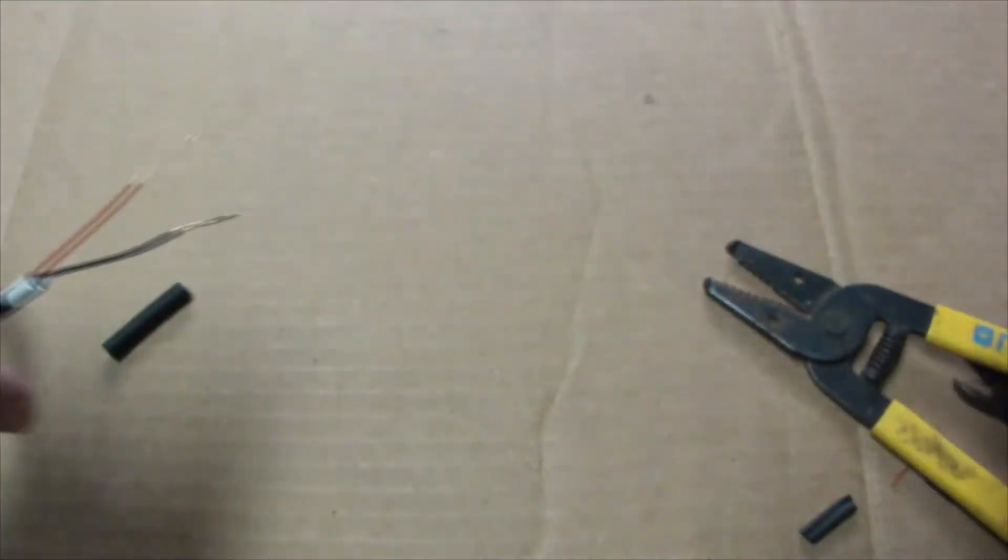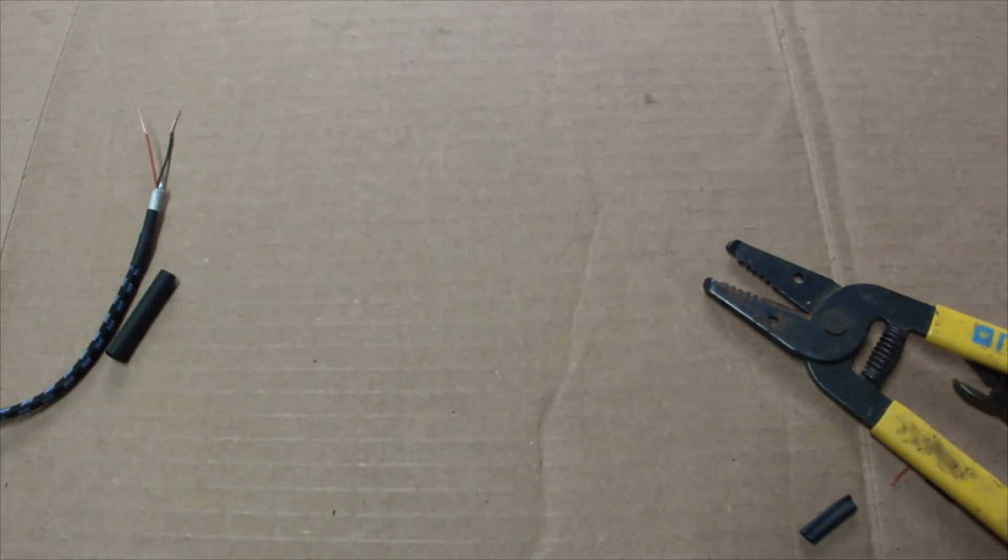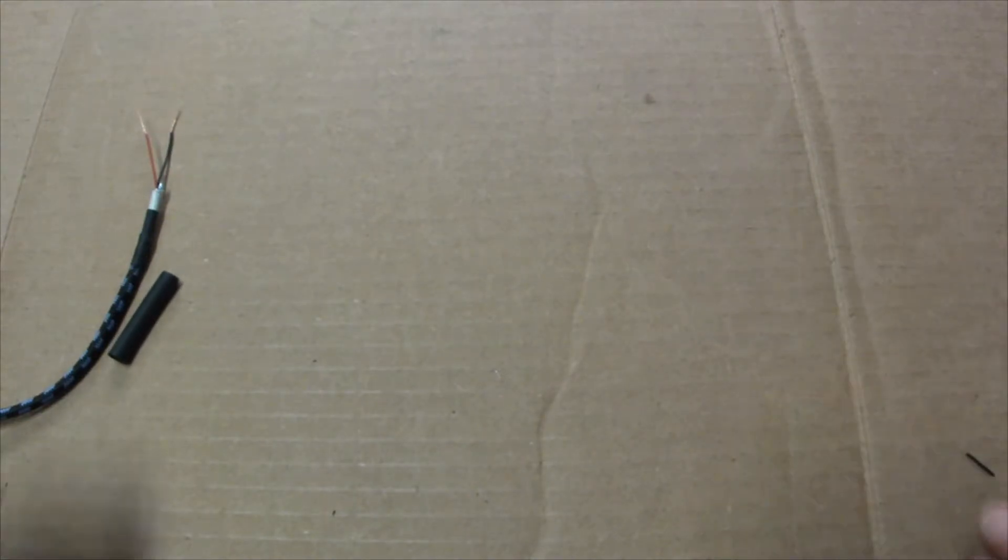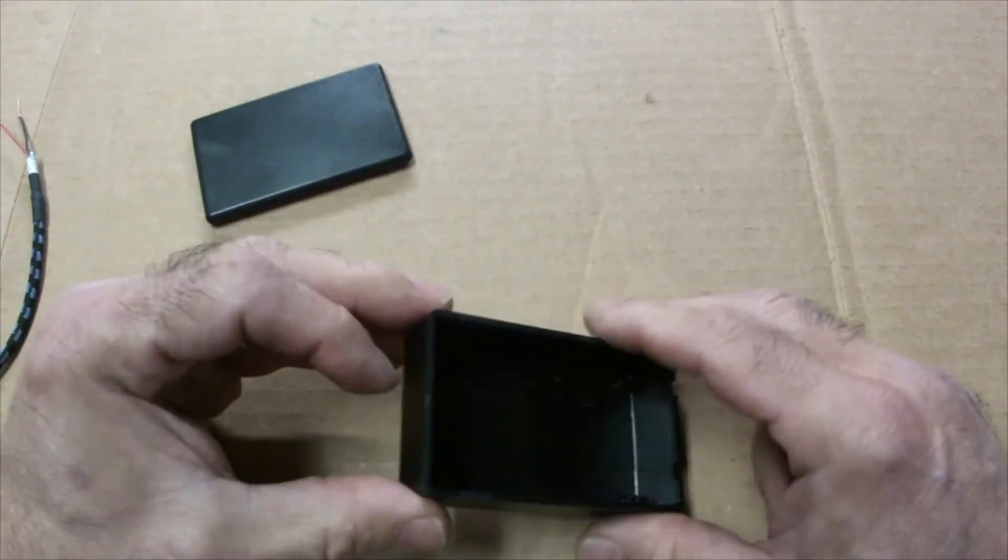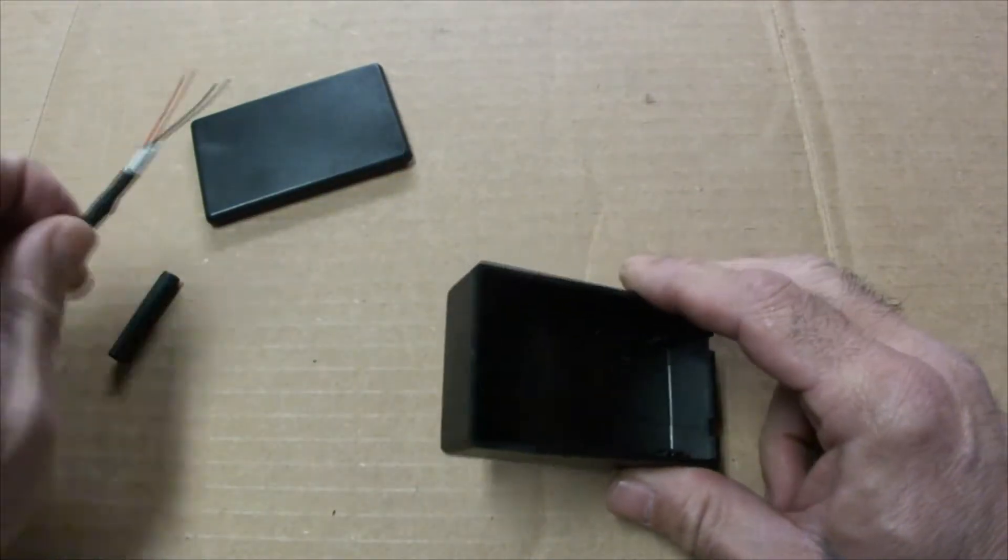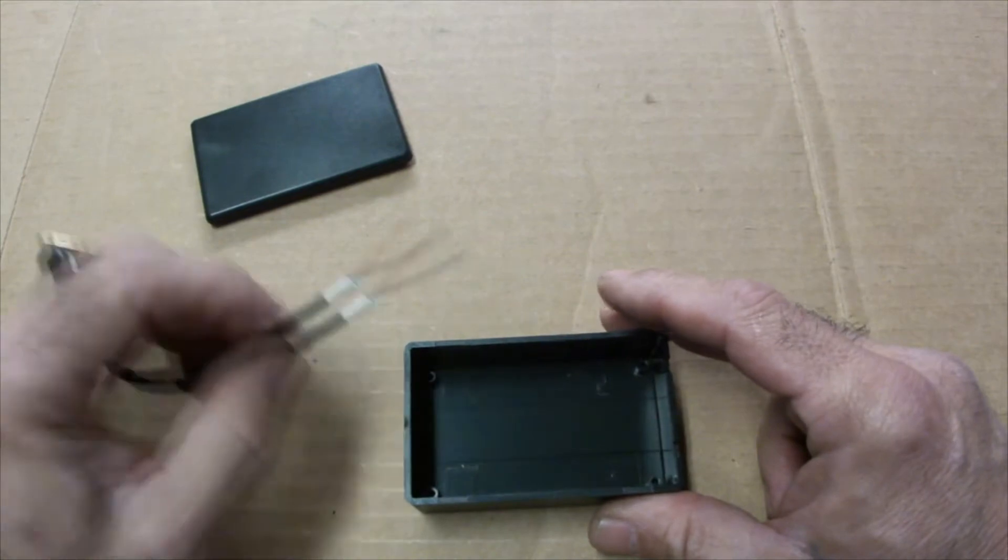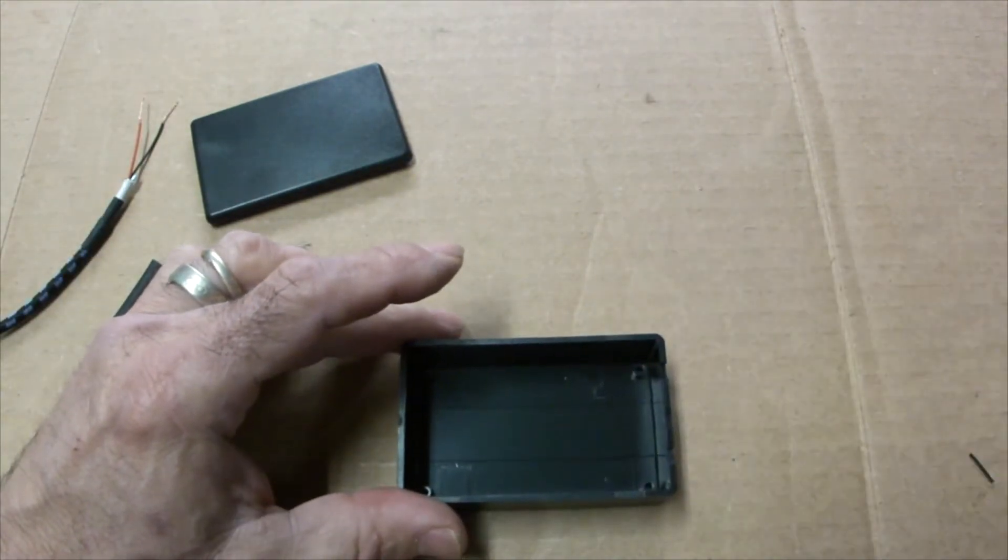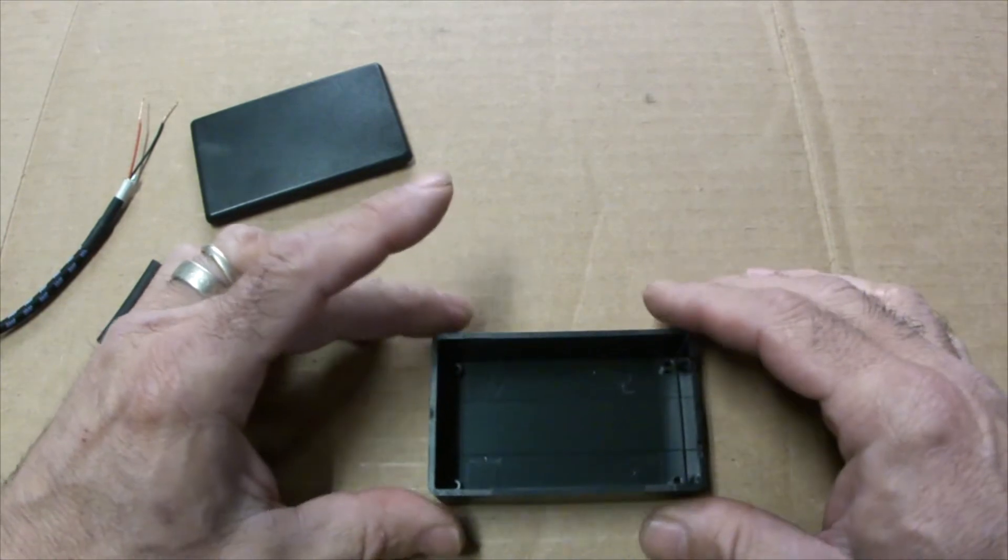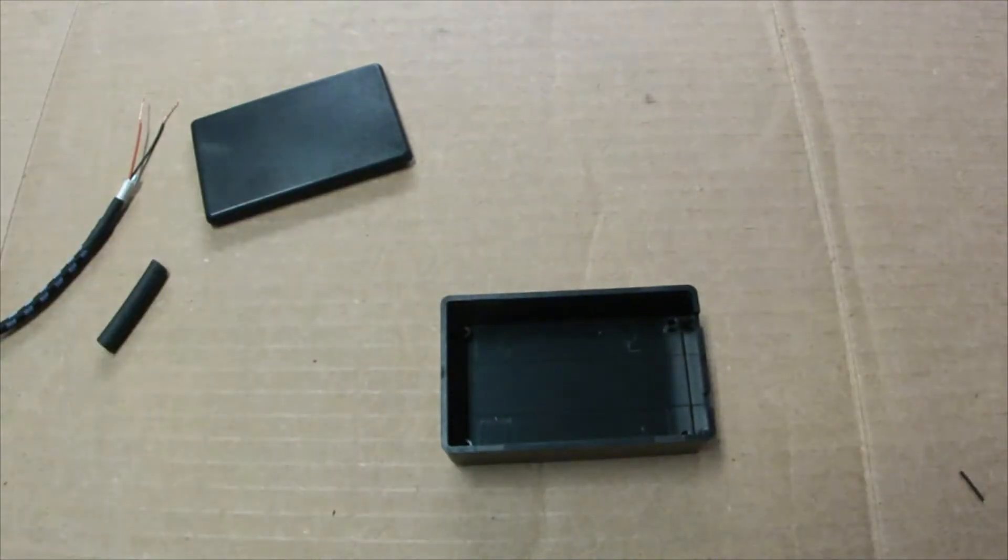All right, I'm gonna set this aside for just a second because the next step is I'm going to prepare the box. To do that I'm going to drill a hole that'll accept this wire in here, and on the other side I'm going to drill a hole that is small enough to accept this wire. So it'll be an in and out. Let me get my little drill bits.